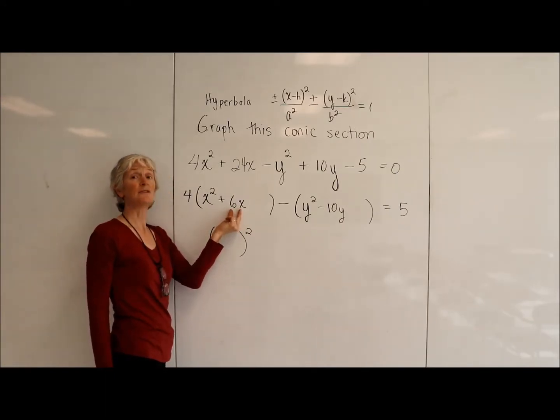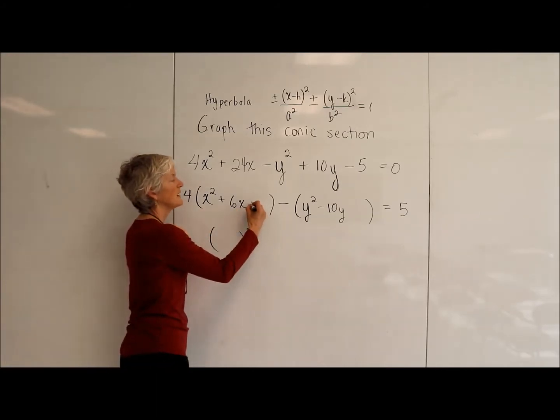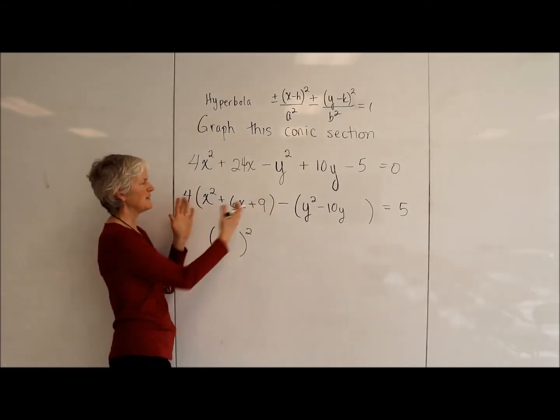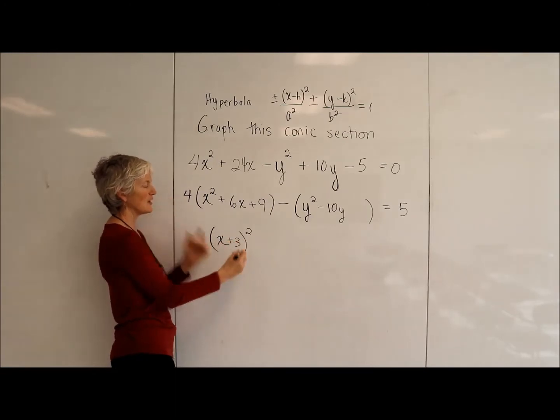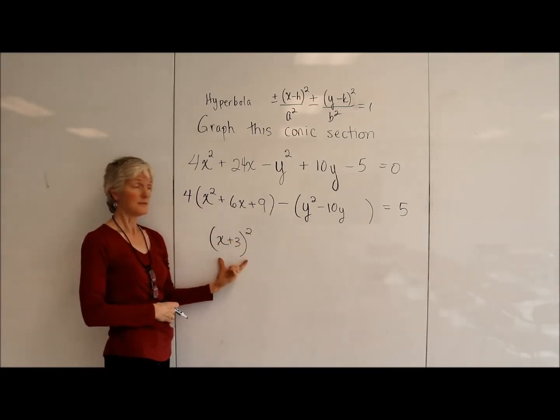Half of that middle term is 3, we square it to get 9. And if you think about it, that works nicely. That would then factor as x plus 3 times itself.